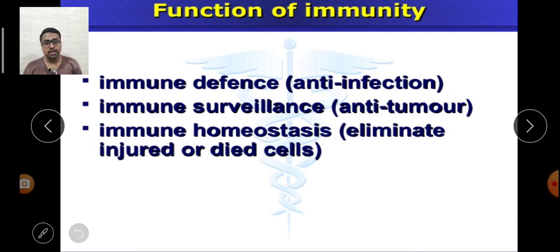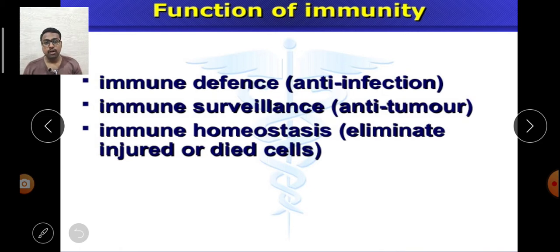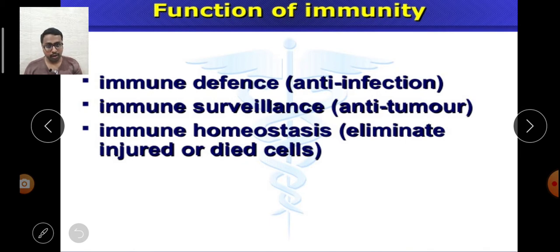The third function of immunity is immune homeostasis — maintaining cells and their normal functioning. In day-to-day life, cells produce lots of toxic materials and substances that are not useful to us. Those unwanted and unnecessary toxic substances must be removed from the body or from cells, otherwise they pose a great threat. There are also cells that finish their normal life cycle and die. Those dead cells must be removed, and this kind of maintenance is carried out by the immune system.